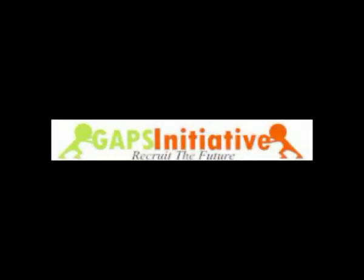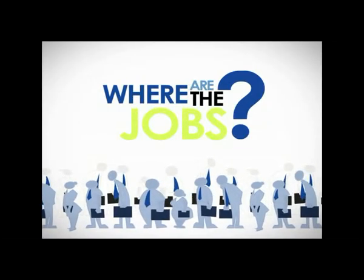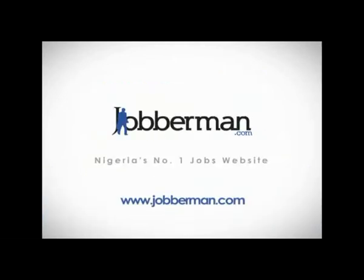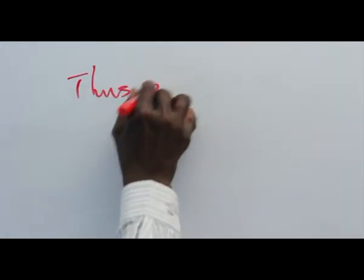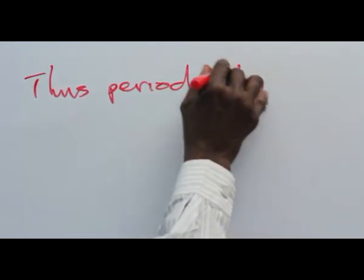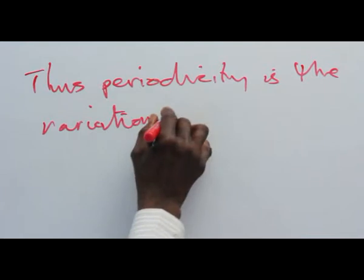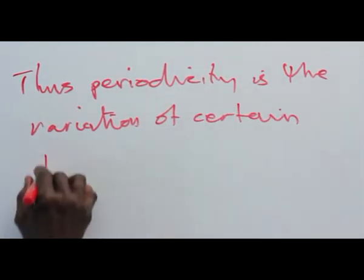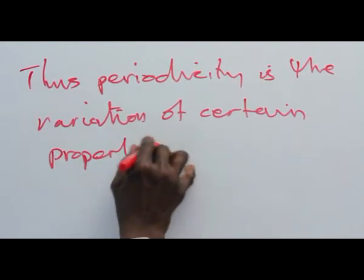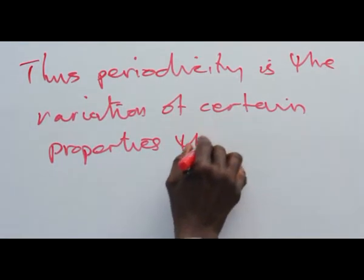Thank you. False periodicity is the variation of certain properties that vary.